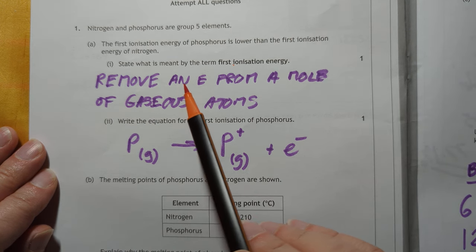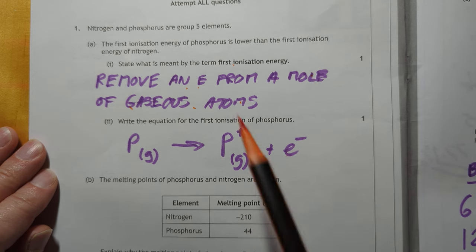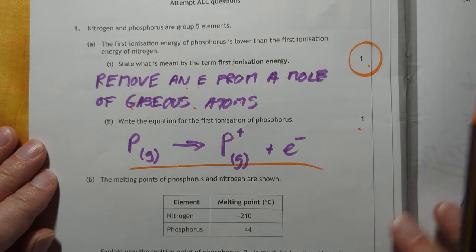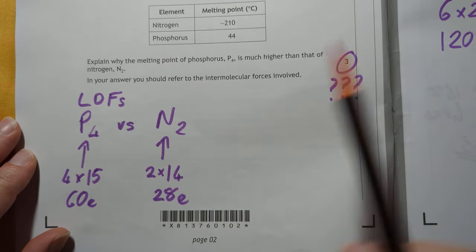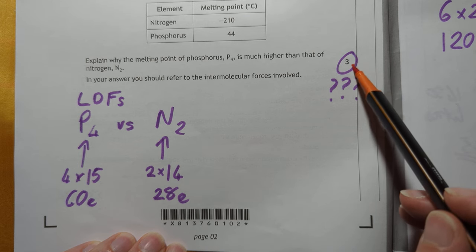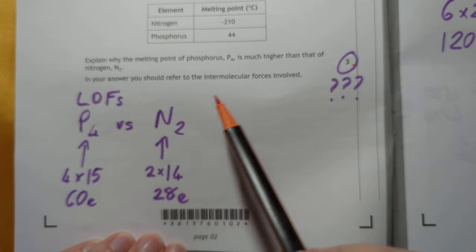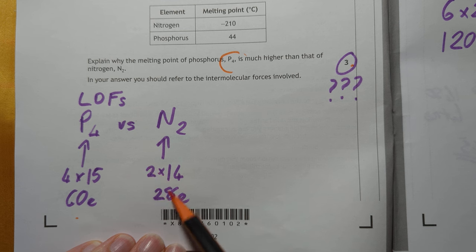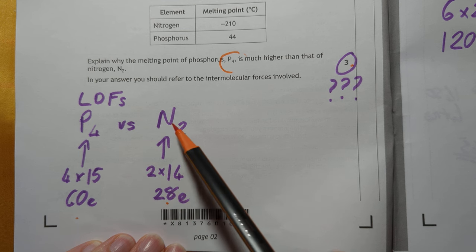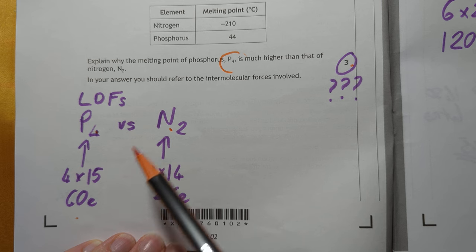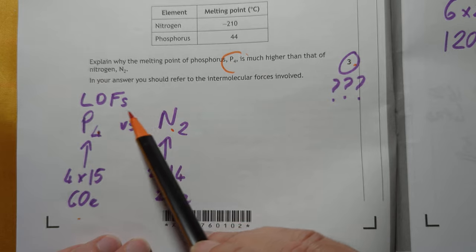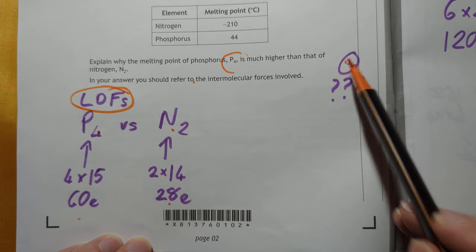First, ionization energy: removing a single electron from a mole of gaseous atoms. I wonder how much detail you need to get the mark. This is just basically in the data book. Explain why the melting point of phosphorus - I have no clue how they're going to allocate these three marks. Phosphorus exists in P4s, which is four lots of 15, giving you 60 electrons per molecule. Nitrogen is just diatomic, so 28 electrons per molecule. Much weaker LDFs than this one. But how they're going to allocate the three marks is a very good question. Do you need to mention the nature of LDFs?